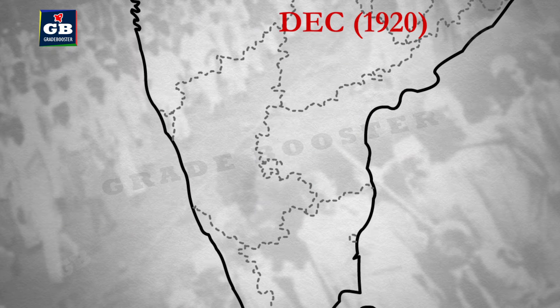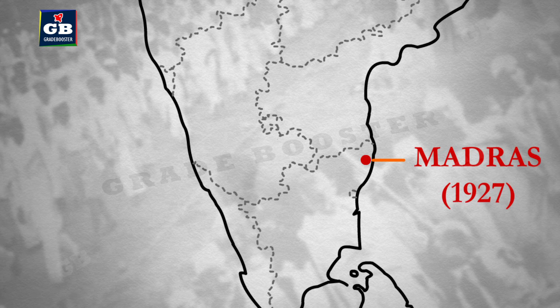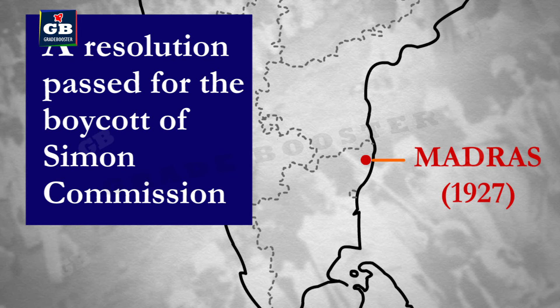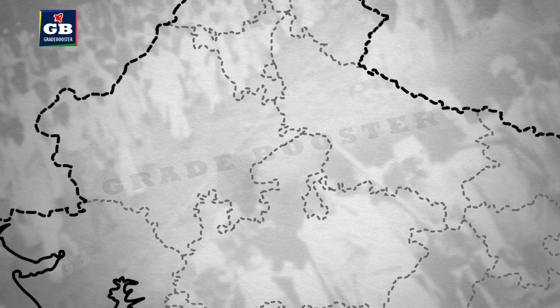Next is the Madras session that took place in 1927. Madras is located on the eastern coast of India in the southeast coastal region. Come to the southern part on the edge, making sure the marking falls in Tamil Nadu. During the Madras session, a resolution was passed for the boycott of the Simon Commission.